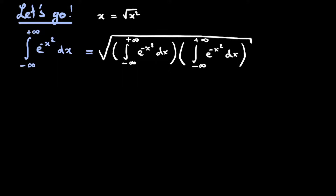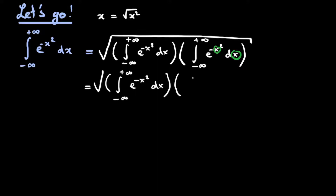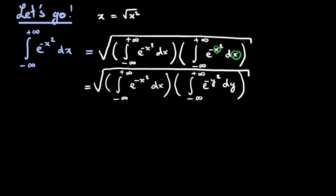At this point we realize that this x is just a name — we could have easily called it u or whatever. In fact we are going to rename it as y. So we get the square root of the first integral from minus infinity to plus infinity of e to the power of minus x squared dx, multiplied by the same integral but now with e to the power of minus y squared dy. We just written x as the square root of x squared and renamed the x in the second integral as y.